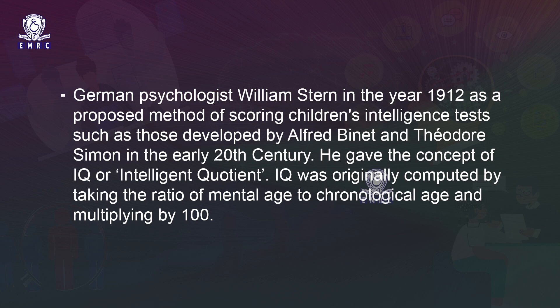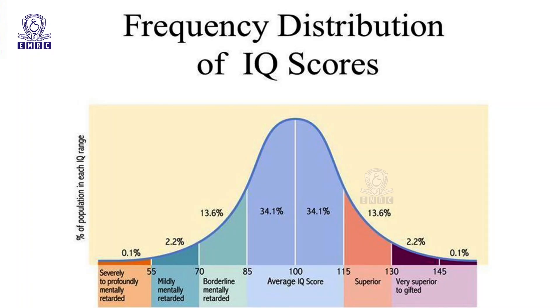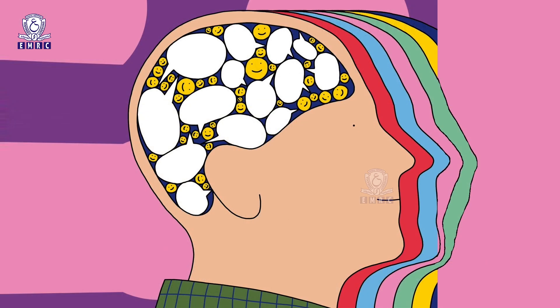German psychologist William Stern in 1912 proposed a method of scoring children's intelligence tests developed by Binet and Simon, giving us the concept of IQ or intelligence quotient. IQ was originally computed by taking the ratio of mental age to chronological age and multiplying by 100. IQ scores are distributed in the population such that most people fall in the middle range, with only a few having very high or very low scores. The frequency distribution approximates a bell-shaped normal curve, confirming that all people do not have the same intellectual capacity.